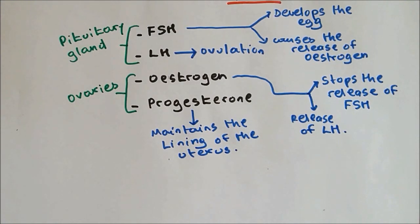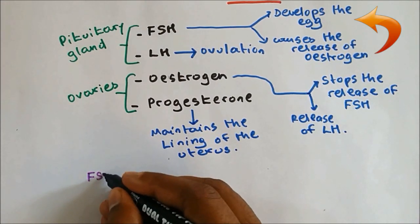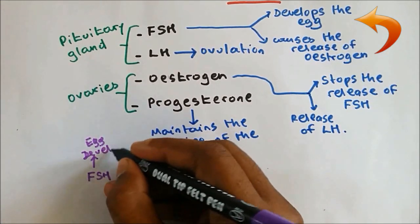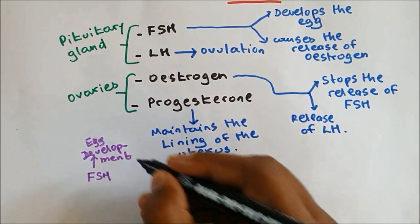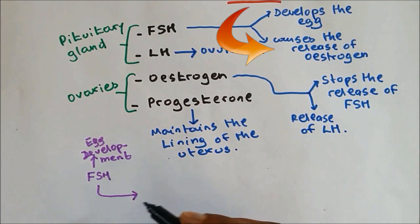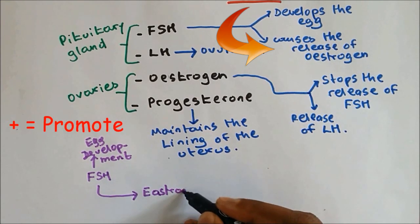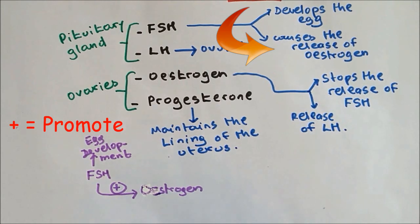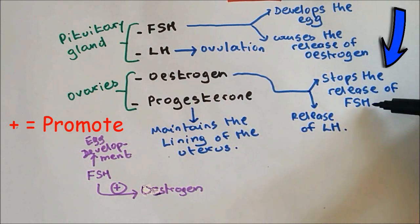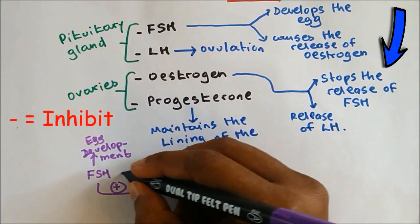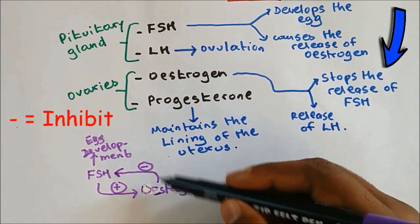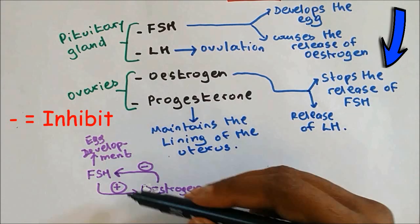Let's draw a flow diagram for this. We know that FSH causes egg development and it causes the release of Oestrogen — the positive sign here shows that FSH promotes the release of Oestrogen. Oestrogen stops the release of FSH, shown by a negative sign, which represents that it inhibits the release of FSH.